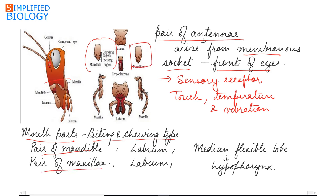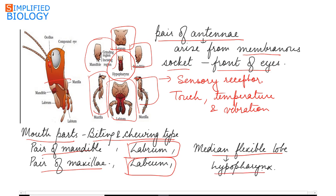A pair of maxilla, labrum which is the upper lip, labium which is the lower lip. And enclosed within the mouth parts is a median flexible lobe called the hypopharynx which acts as the tongue.